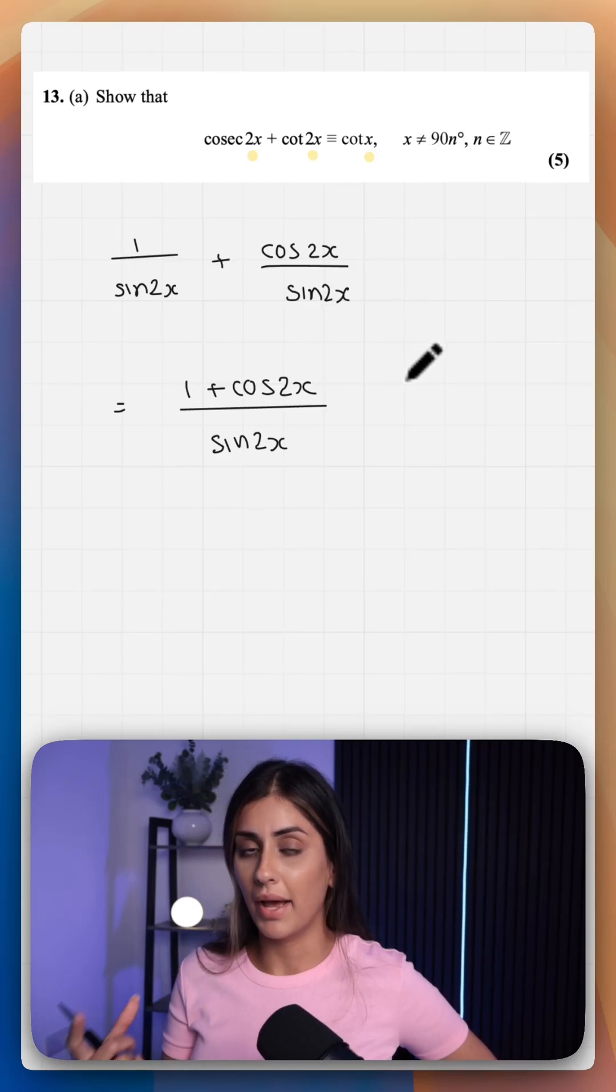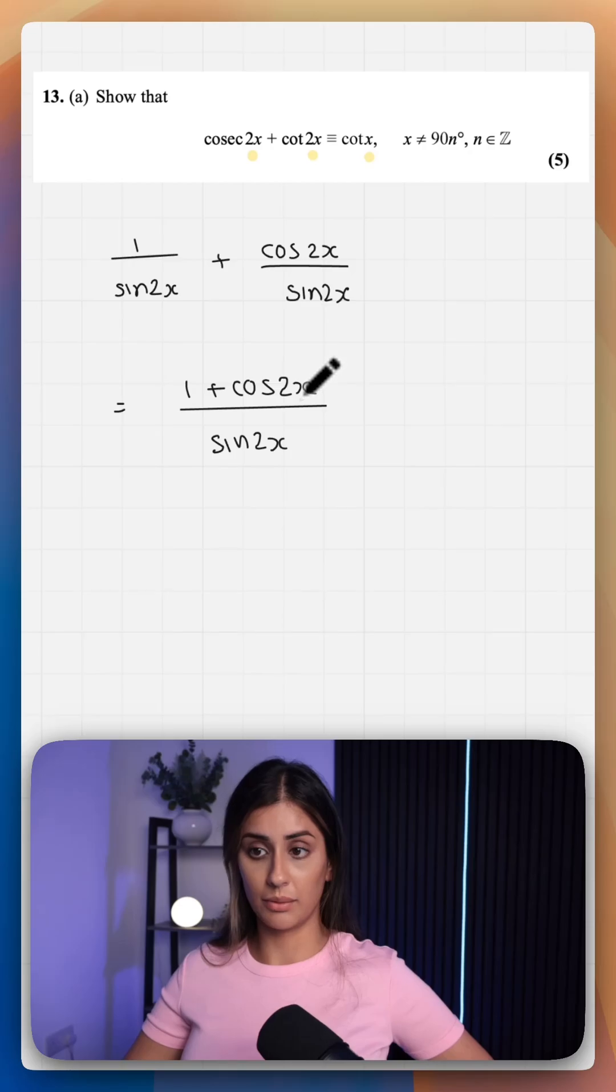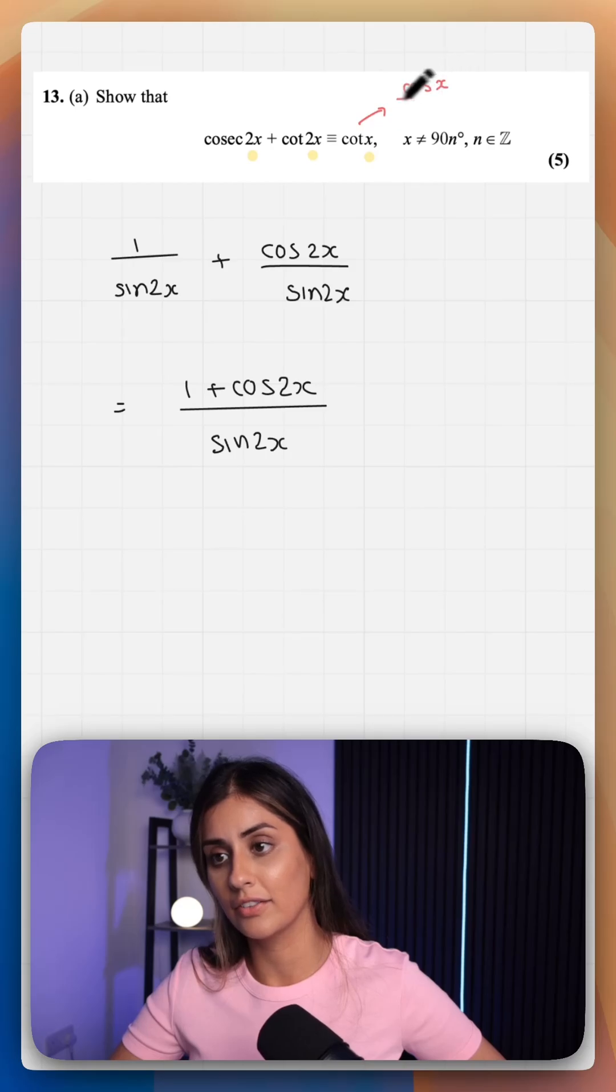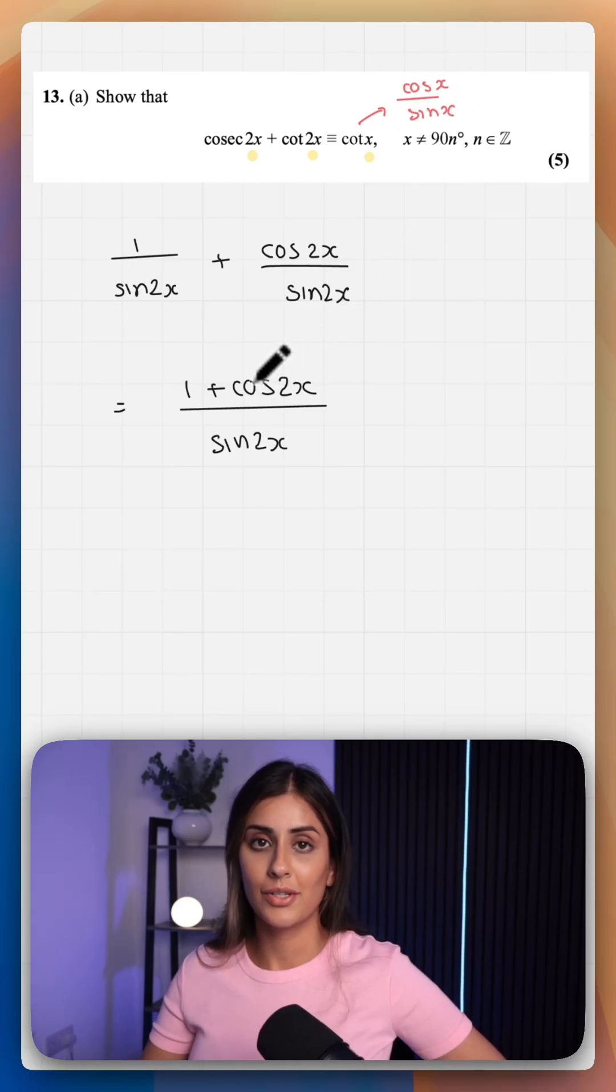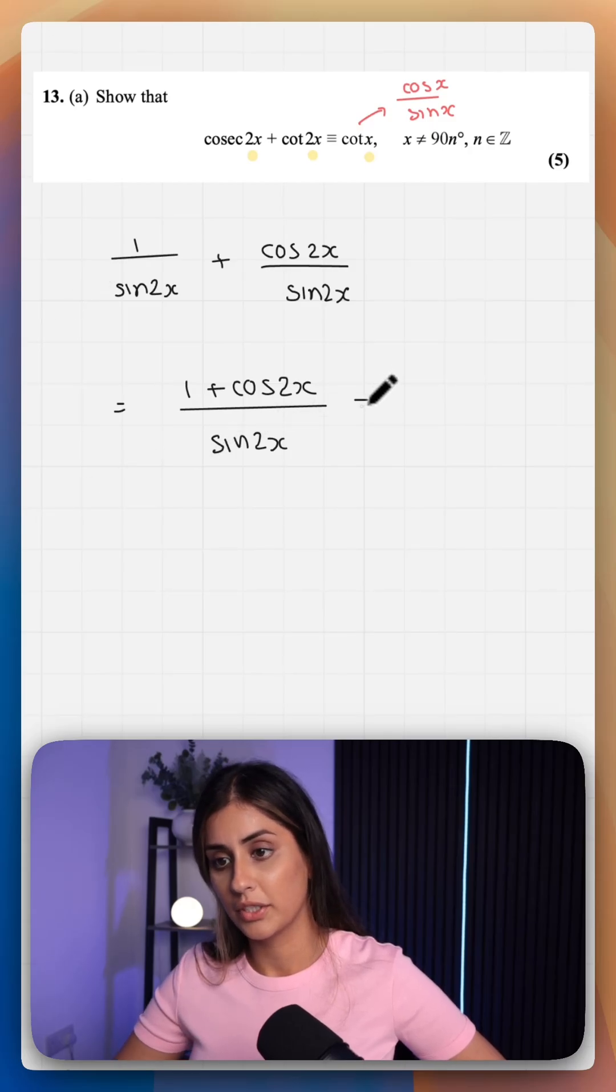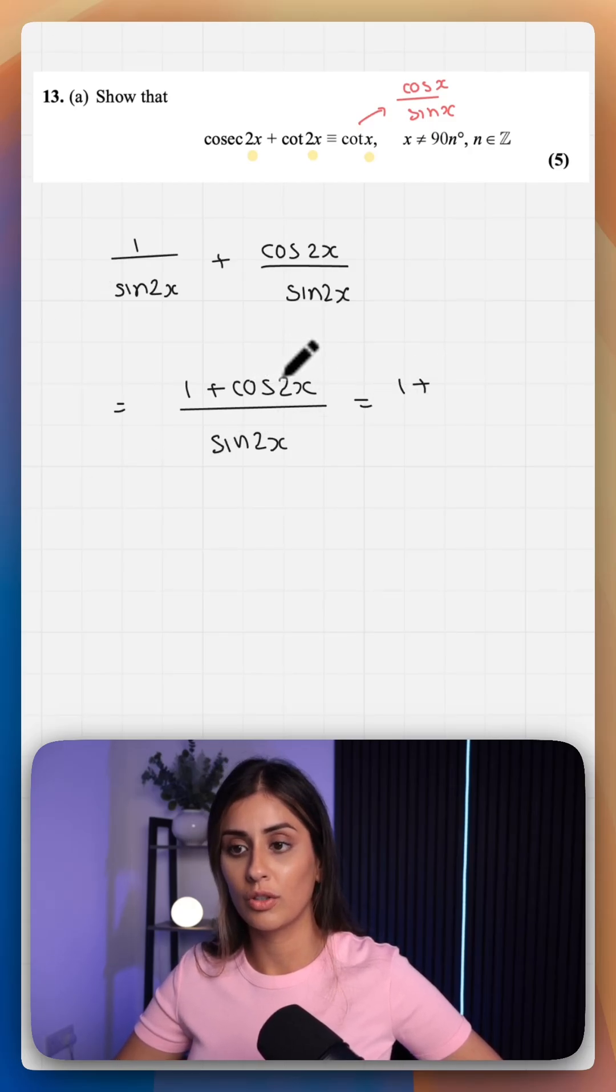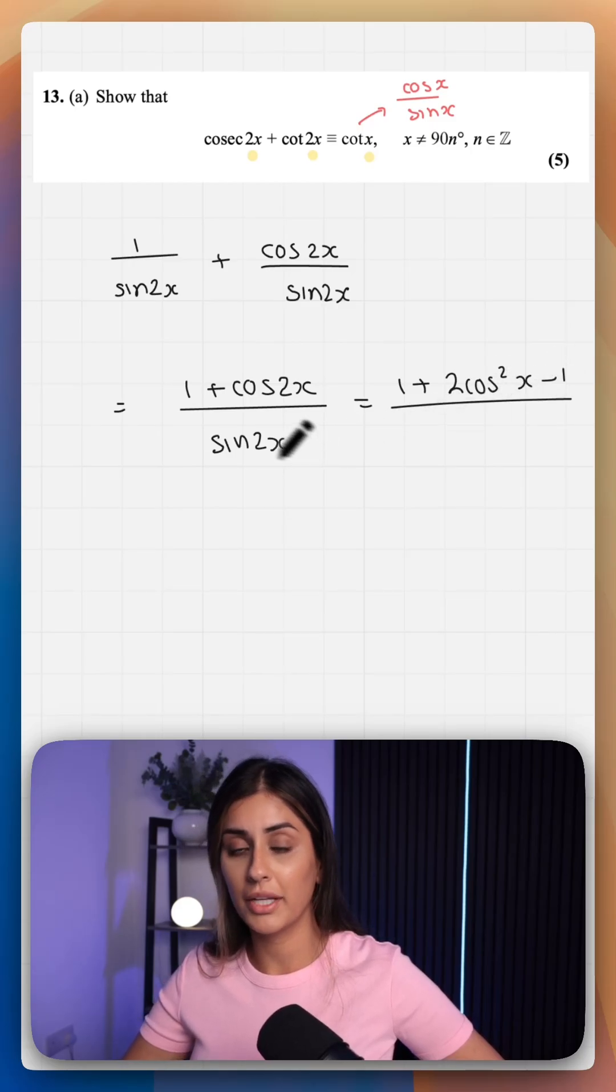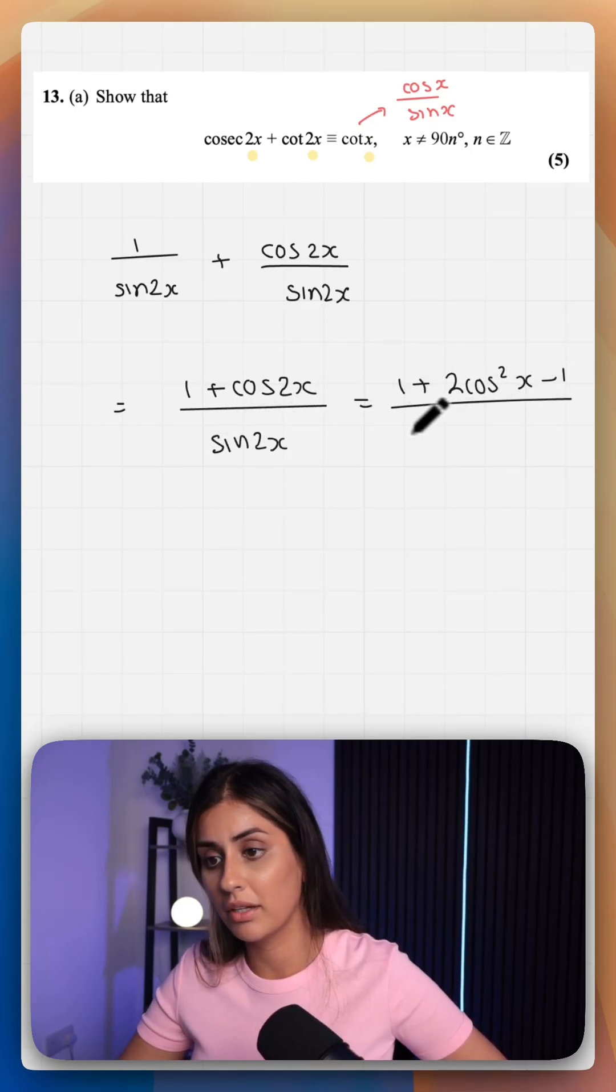Now let's think about the best trig identity to use for the cos double angle formula because there's three. For cot this is essentially cos x over sine x. So we want to use the double angle formula which has cos in it, which is 2 cos squared x minus 1. And on the denominator we only have one double angle formula for sine 2x.